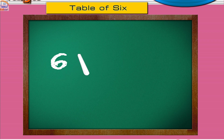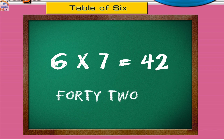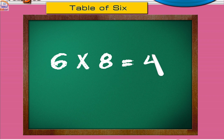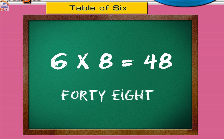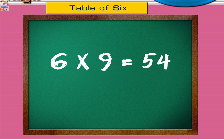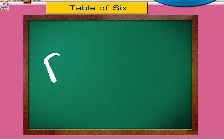Six sevens are forty-two. Six eights are forty-eight. Six nines are fifty-four. Six tens are sixty.